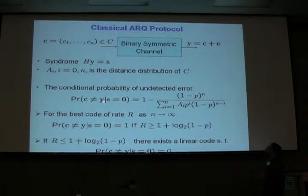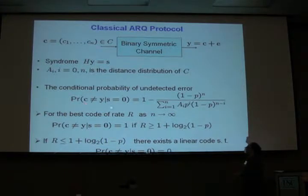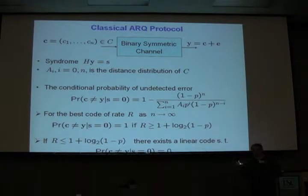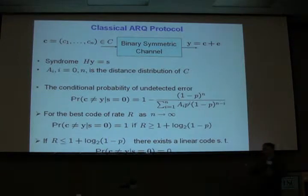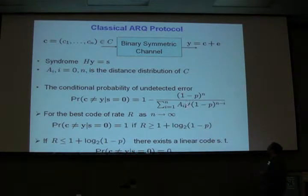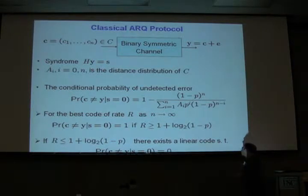I suggested to consider the probability that C does not equal Y under the condition that syndrome is 0. This probability makes more sense from my point of view: if I received Y, computed the syndrome, and see that syndrome is 0, under that condition I would like to know the chances that Y is not the same as C. So given syndrome is 0, what is the probability that if I assume Y is the transmitted information, I will make an error? This conditional probability is different from the unconditional one.